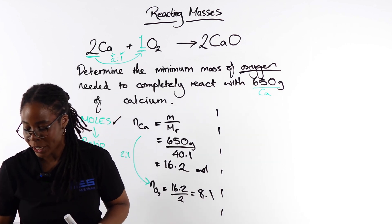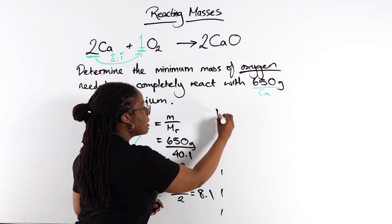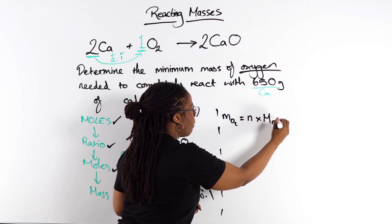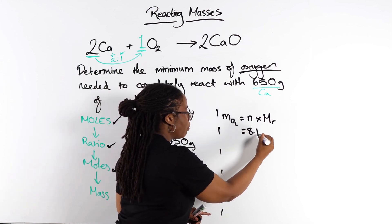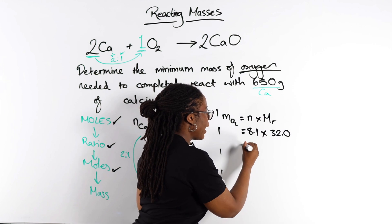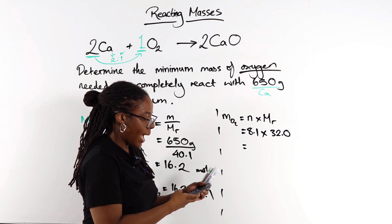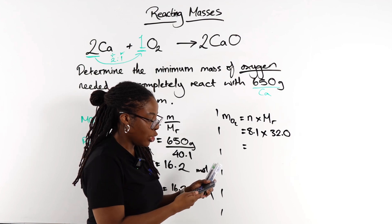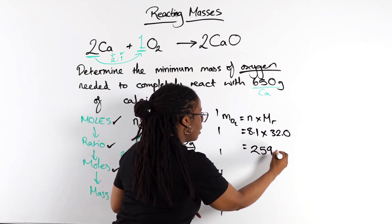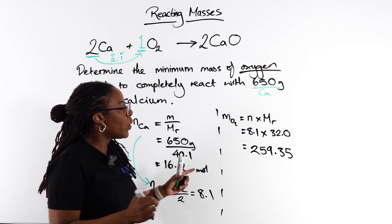Now I have the moles of oxygen. Moving to the other side of the page: mass of O₂ = moles × Mr = 8.1 × 32.0 = 259.35 g.